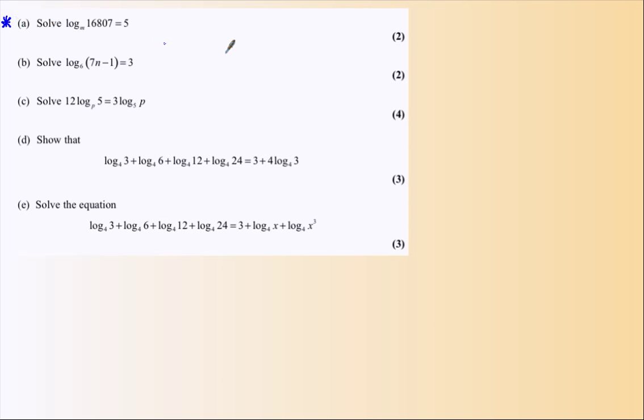In part A, this is a case of making sure that we are aware logarithms are indices. If we're asked a logarithm, we're asked about an index, and this statement in A is equivalent to saying that m to the power of 5 equals 16807. To get back to m, I will take the fifth root of both sides.